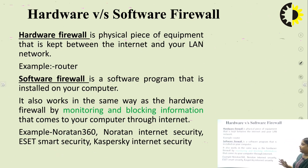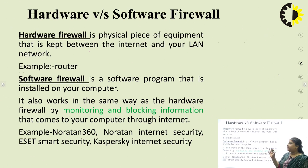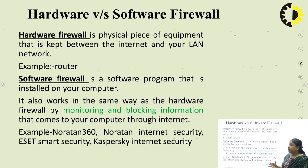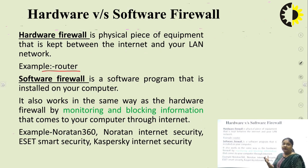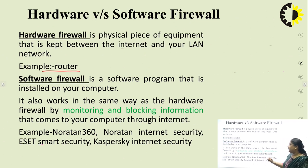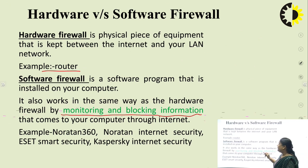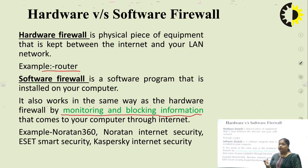There are two types of firewalls: hardware and software. A hardware firewall is a physical piece of equipment placed between the internet and the LAN network — for example, a router. A software firewall is a program installed on our system that works the same way as a hardware firewall by monitoring and blocking information that comes to your computer through the internet. Examples include Norton 360, Internet Security, and Kaspersky.